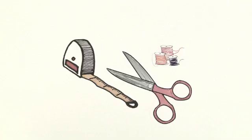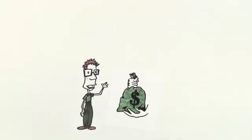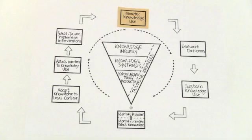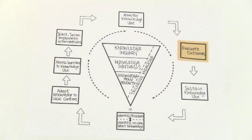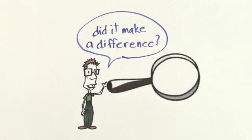The KT intervention strategy needs to be tailored to the context in which it will be used. If you're going to spend lots of time and money to implement the knowledge, then you'll also want to monitor the knowledge uptake and evaluate whether it has an impact on health or system outcomes. You'll need to decide on what outcomes to measure, how to measure them, and when they should be measured.